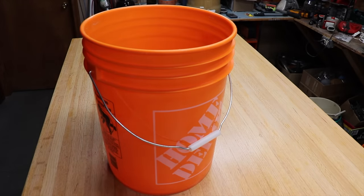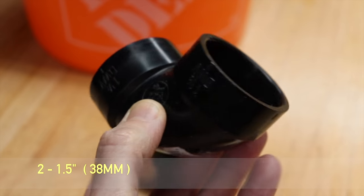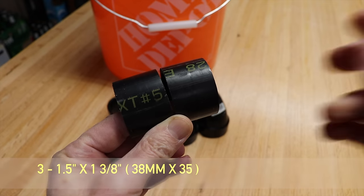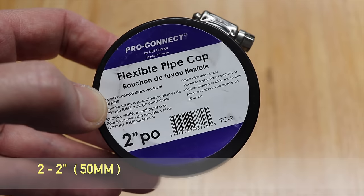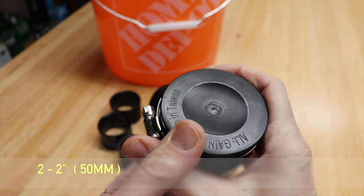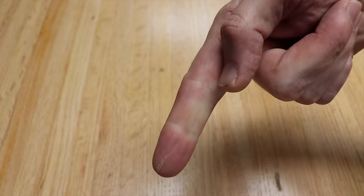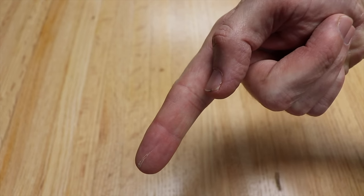So you'll need one five gallon bucket, two inch and a half 90 degree ABS fittings, two straight couplers, two pieces of inch and a half pipe an inch and three-eighths long, two two-inch flexible pipe caps, and one lid. And like always any of the parts or tools I use in this video will be linked in the description below.